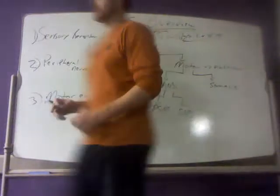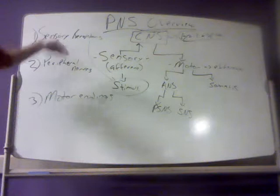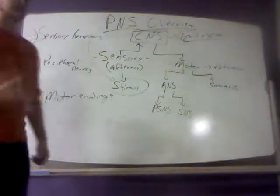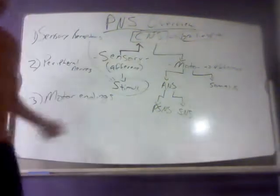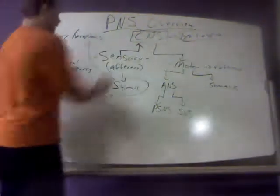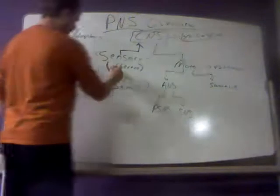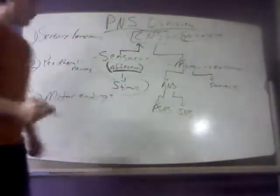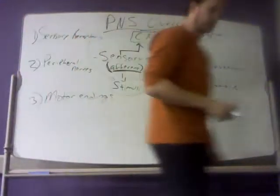Sensory receptors are constantly detecting changes in our environment and then relaying this information in a specific fashion to the central nervous system to be processed. We would say that the sensory part of our peripheral nervous system is afferent. When you see the word afferent, think of moving towards the main object — that's what the sensory aspect of our peripheral nervous system does.